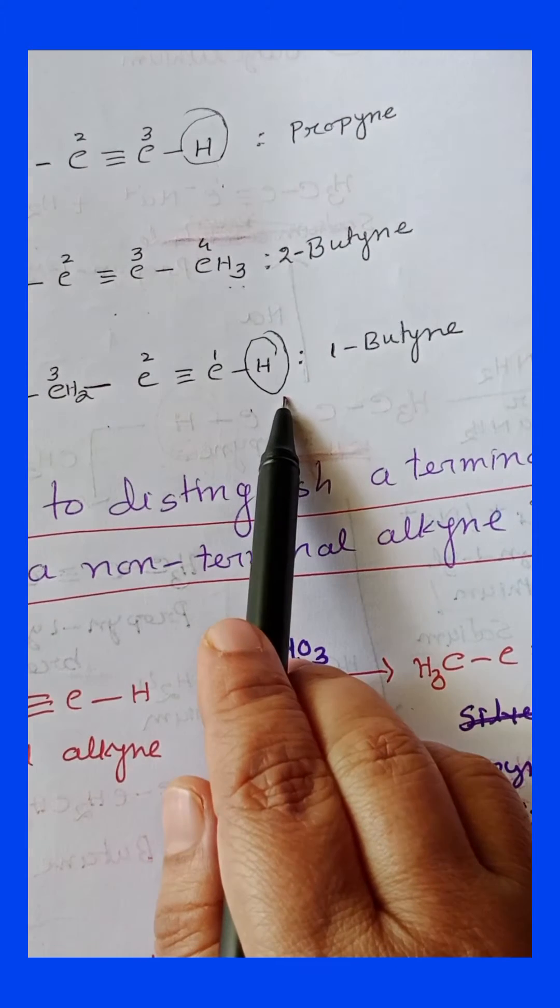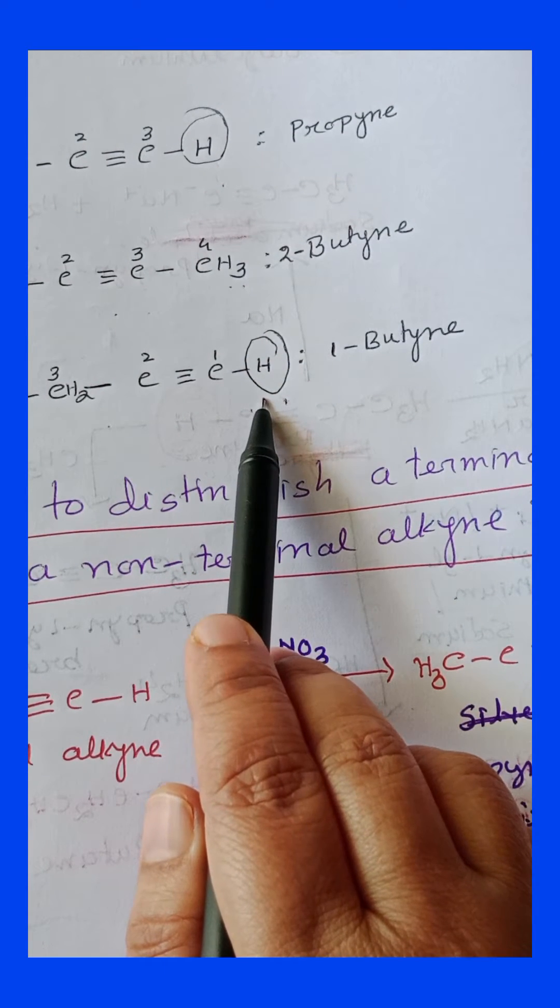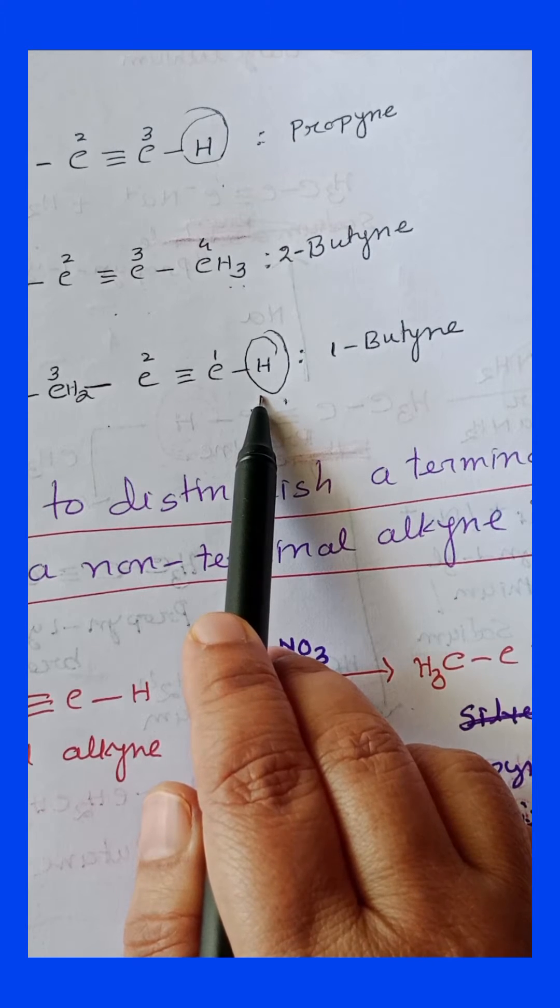Similarly, this is 1-butyne. 1-butyne also we can see one hydrogen at the end of the molecule. So this is also terminal alkyne.